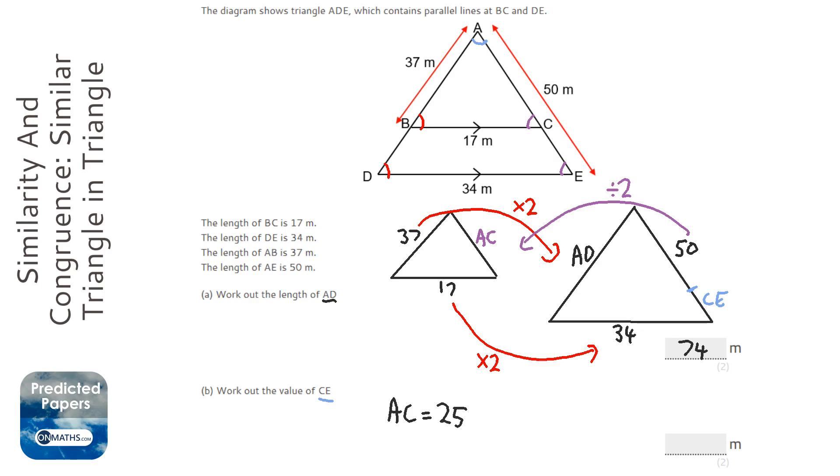Now if AC is 25 and the whole thing is 50. So let's try and make this a bit clearer. So the whole thing is 50 and AC is 25. So this bit up until this bit. Then CE must be 25 as well, because it's 50 take away 25, which is 25.